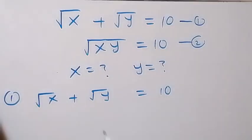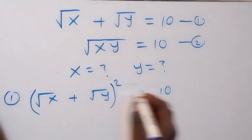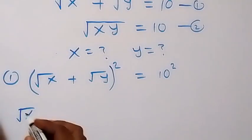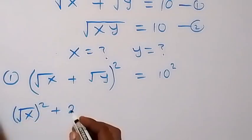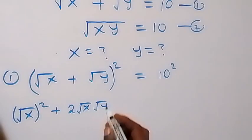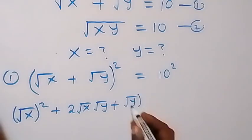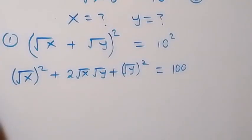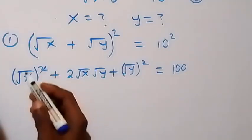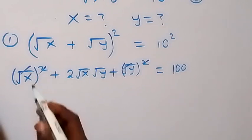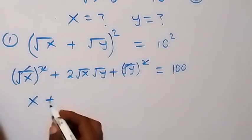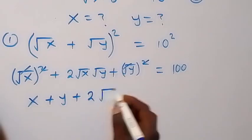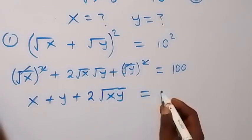And here, let's raise both sides to power 2, so let's square both sides. The expansion from here gives us root x squared plus 2 times root x times root y, then plus root y squared, then equals to 10 squared. From here, the squares cancel the square roots, and we can take x plus y together. So we have x plus y, then plus, bringing this together under the same root, and this will be 2 root xy, which is equal to 100.